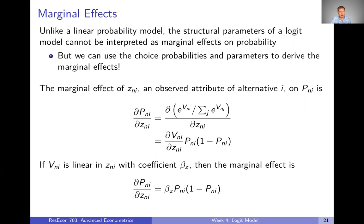Let's say we wanted to know: if we change our data for alternative i by a little bit, how does that affect the probability of choosing i? Going back to the car versus bus commute choice example — if we change the cost of driving by a little bit, how does that change the probability of driving? This derivative is the mathematical expression for that: if we make a tiny change in the cost of driving, what effect does that have on the actual probability of driving?